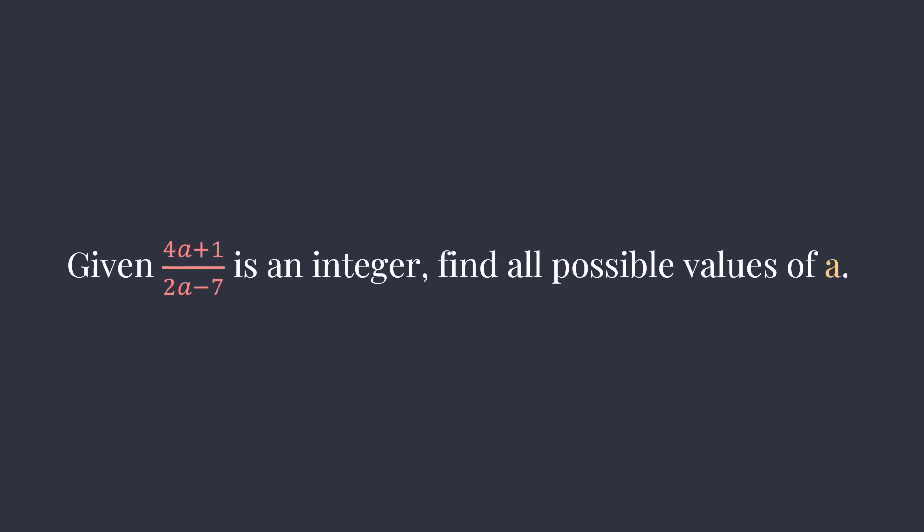How do we find all possible values of a so that this quotient of 4a plus 1 and 2a minus 7 is an integer? So we just plug in random numbers into a and see if we are lucky.